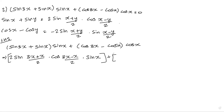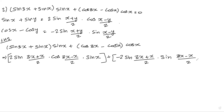Next, applying cos x minus cos y formula: minus 2 sin of (x plus y), so 3x plus x divided by 2, into sin of (x minus y), so 3x minus x divided by 2, into cos x.